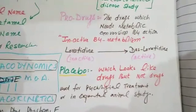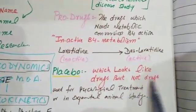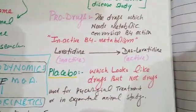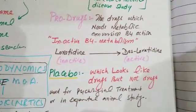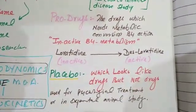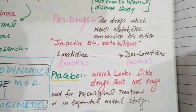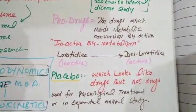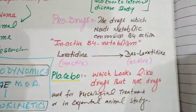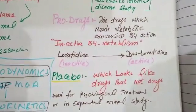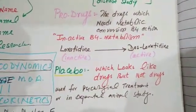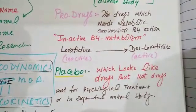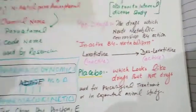Placebos are substances which look like a drug but are not a drug. They don't contain active material — they contain only excipients, for example a tablet of only starch or a tablet of only cellulose. We use placebos for psychological treatment, or they are also used in experimental animal studies.